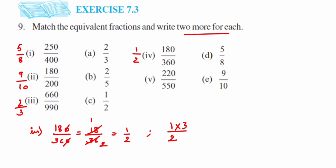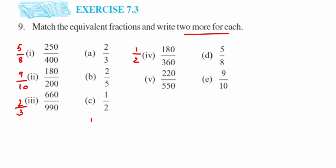For 1/2, I'm going to multiply with different numbers to get equivalent fractions. Multiplying numerator and denominator by 3 gives 3 upon 6. Again, multiplying 1/2 by 6: 1×6 = 6 and 2×6 = 12, giving 6/12. So these are two equivalent fractions for 1/2.